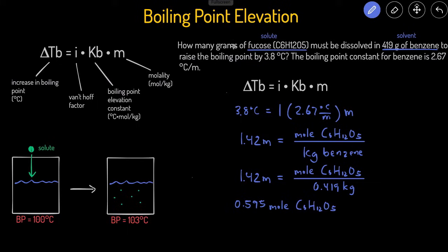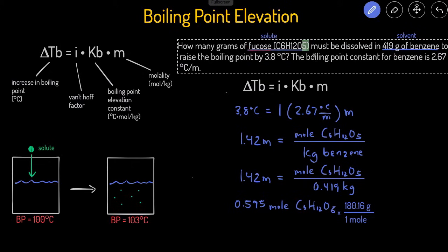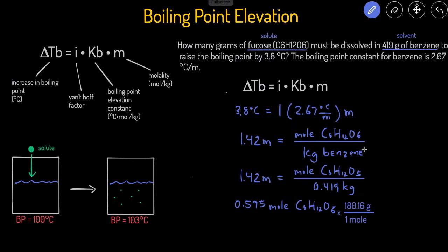Now that we have the moles, to get grams we multiply by the molar mass of fructose (C6H12O6) — noting a correction that the formula is O6, not O5. The molar mass of fructose is 180.16 grams per mole. Multiplying 0.595 moles by 180.16 grams per mole, the moles cancel out, giving us 107 grams of fructose as our final answer.